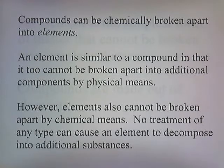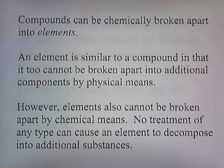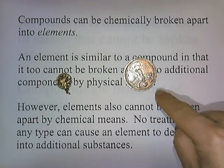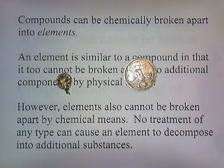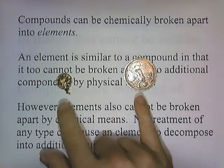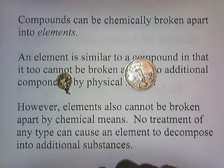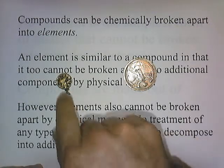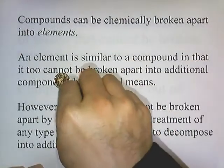Compounds can be chemically broken apart into elements. An element is similar to a compound in that it too cannot be broken apart into additional components by physical means. However, elements also cannot be broken apart by chemical means either — no treatment of any type can cause an element to decompose into additional substances. For example, here are the elements silver and gold. Heating them to extreme temperatures won't break them apart into new substances, passing electricity through gold won't produce new substances, and treating them with different chemicals still leaves silver intact and gold as gold. In fact, gold is quite resistant to chemical reactions — that's what makes it so valuable.